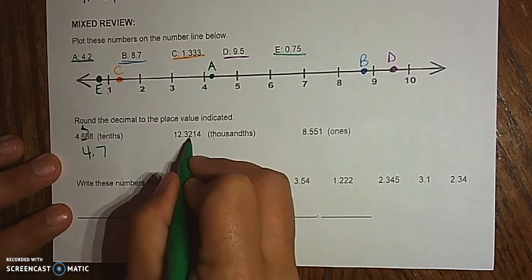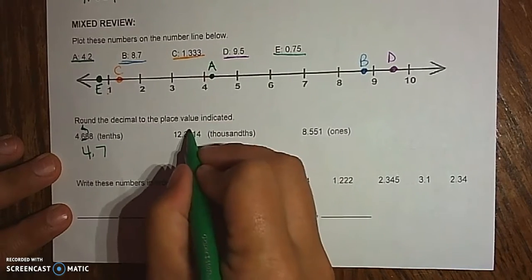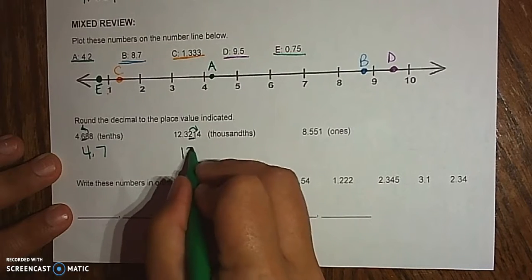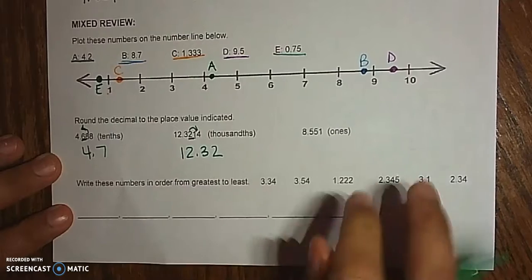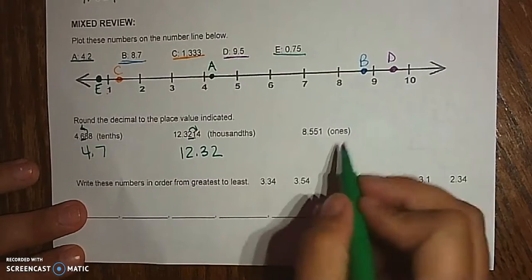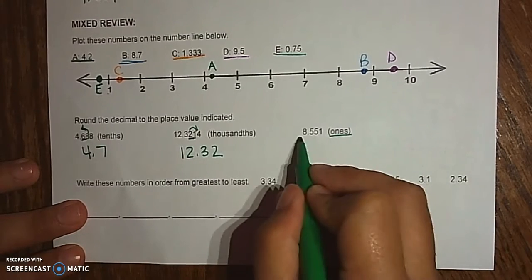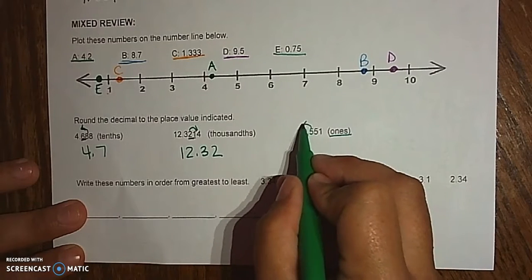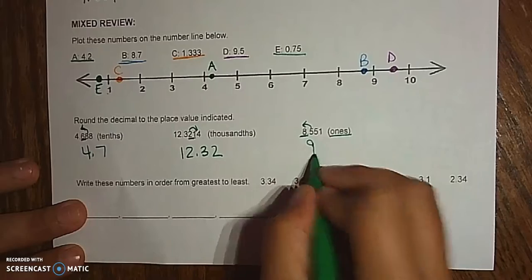This wants thousandths, which is our second digit. We look to the 1 over here, and since that's less than 5, we leave it alone. So, this wants the ones spot, so it doesn't want any decimals at all. Well, 5 is going to round that one up to a 9.